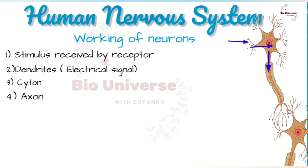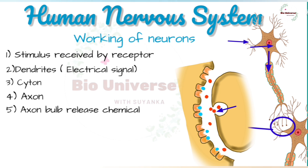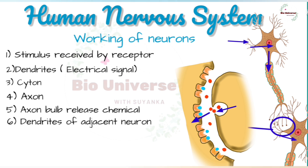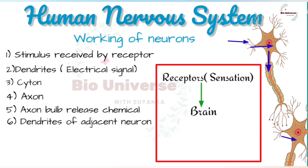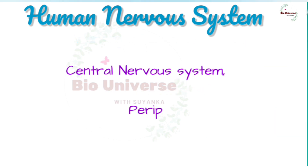An impulse passed on by the cytone travels along the axon of the neuron. When it reaches the end of the axon, it causes the axon bulb to release a chemical which diffuses across the synapse and stimulates the dendrites of the adjacent neuron. These dendrites in turn send electrical signals to their cell body to be carried along the axon. In this way, the sensation from the receptor is passed on to the brain or spinal cord, and a signal from the brain is similarly passed on to the effector which carries out the appropriate response.